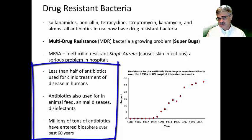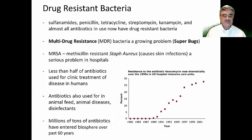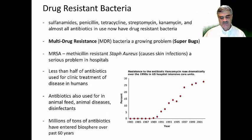More than half of antibiotics are used in animal feed and as disinfectants. Having so many antibiotics in our environment induces more and more drug resistant bacteria. The graph in the bottom right shows the percentage of bacteria now resistant to an antibiotic called vancomycin, and you can see that beginning around 1990 there has been a significant increase in the number of vancomycin resistant strains of bacteria.